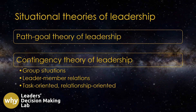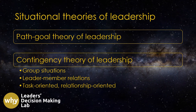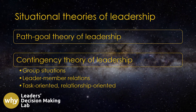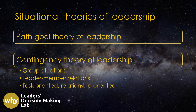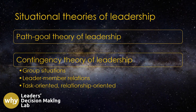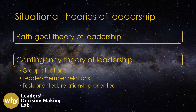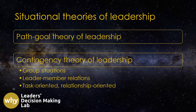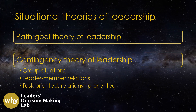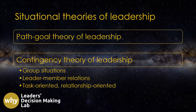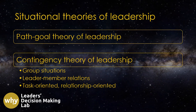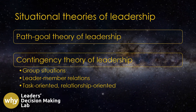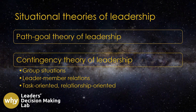The Path-Goal Theory of Leadership represents a compelling framework that examines the effectiveness of diverse leader behaviors in different contexts. This theory belongs to the category of Situational Theory of Leadership, which recognizes the absence of a one-size-fits-all approach to leadership behaviors and instead underscores the importance of situational factors in determining the optimal leadership behavior.